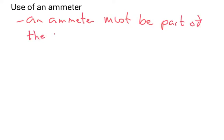So how do you use an ammeter? Well, an ammeter has to be part of the circuit. What do I mean by that? The current must flow through it.